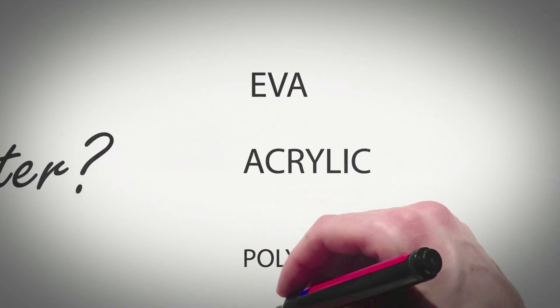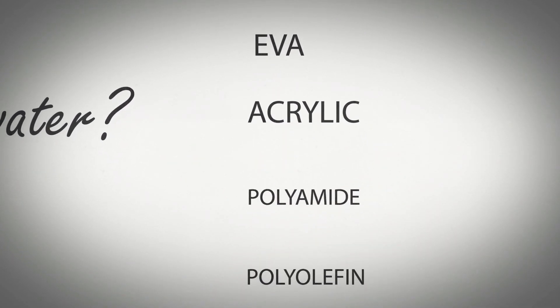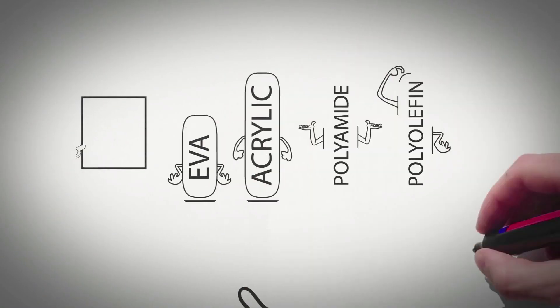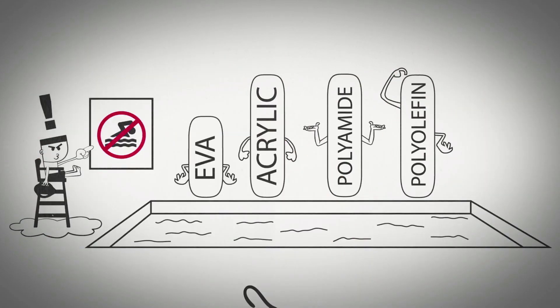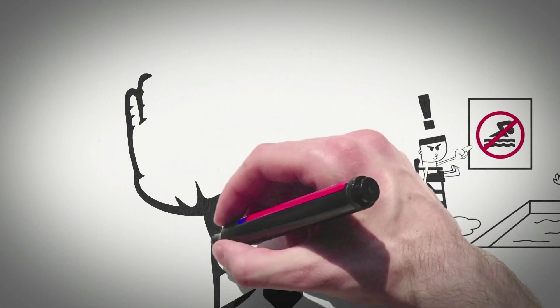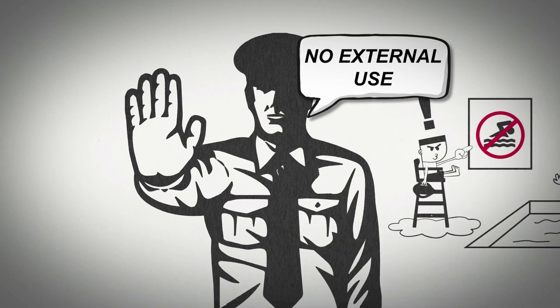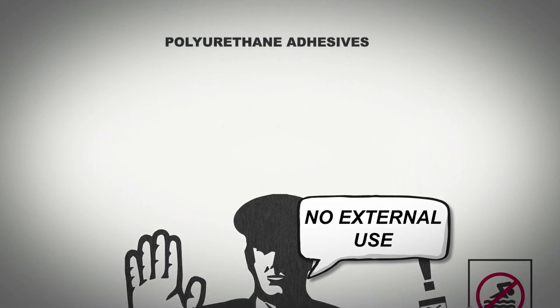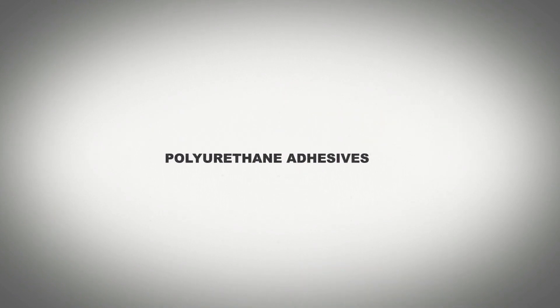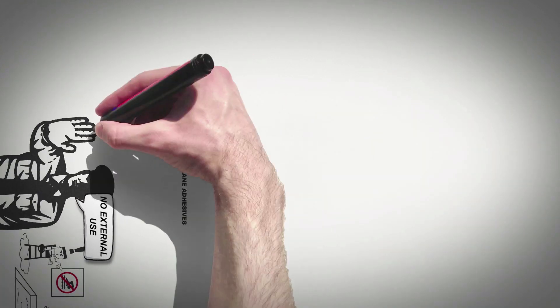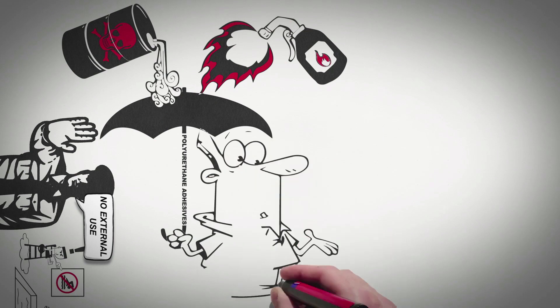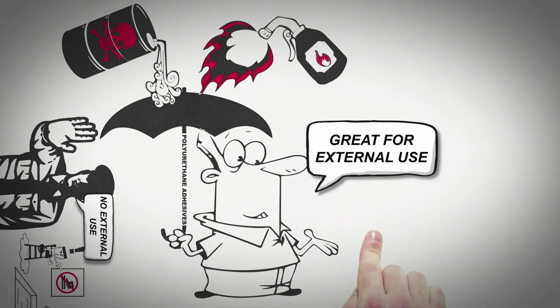Standard hot melt adhesives such as EVA, acrylic, polyamide, and polyolefin are not waterproof, and applications involving water should be avoided. Hot melt adhesives are not recommended for external use unless specified by a member of the glue guns direct team. However, polyurethane adhesives cross-linked once cured offer excellent heat and chemical resistance and can even be dry cleaned and used externally.